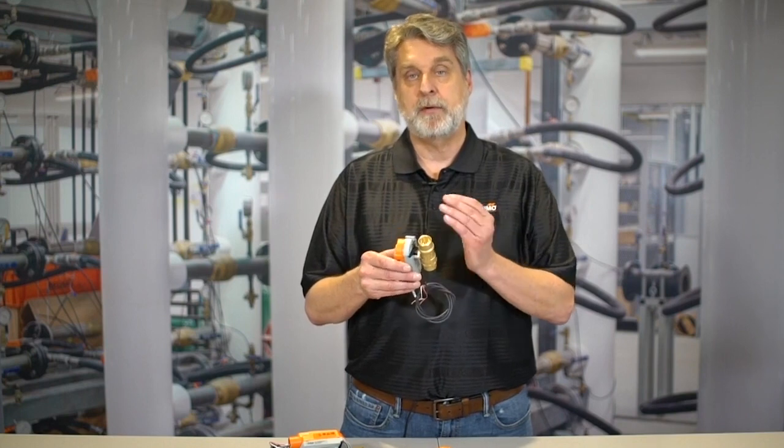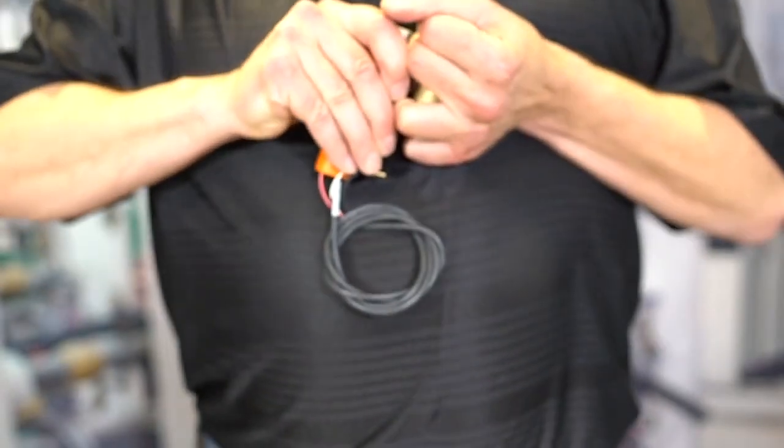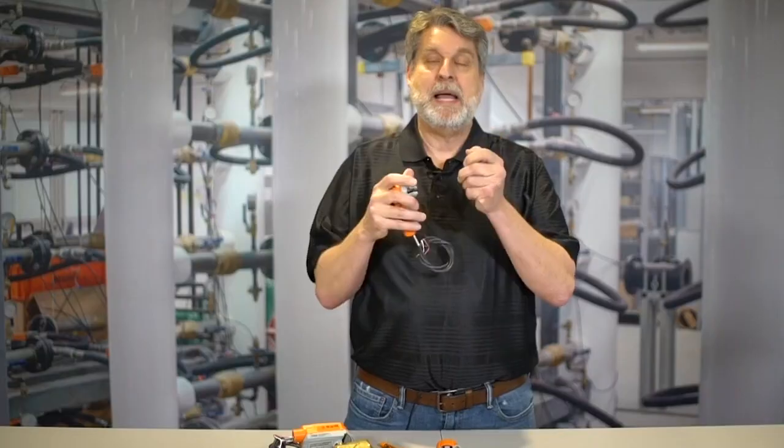First thing, very simple to take apart the zone valve. You don't need any tools, wrenches or screwdrivers, and you don't need to twist or turn. We don't want to break off the pins that are holding the valve to the actuator. I'm going to grab the valve body in one hand, grab the actuator in another, and pull straight up.